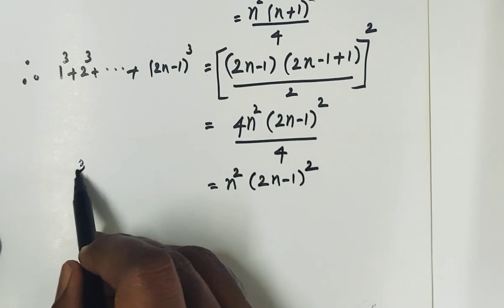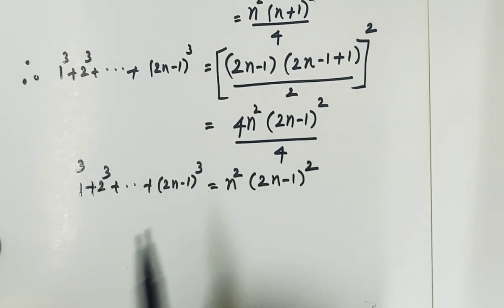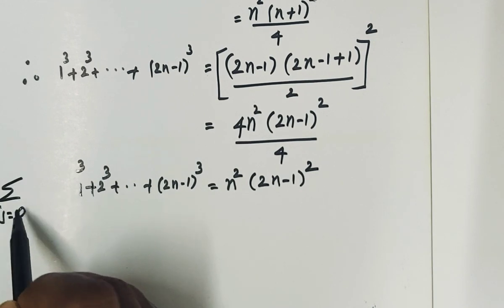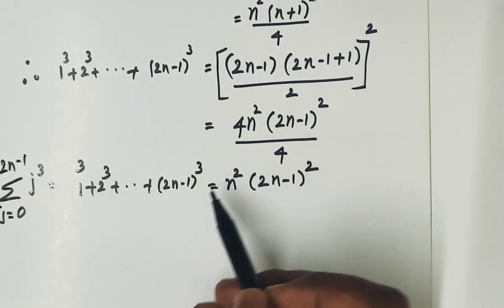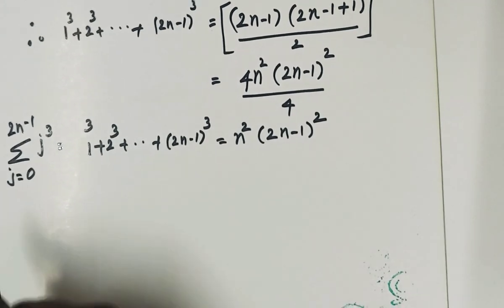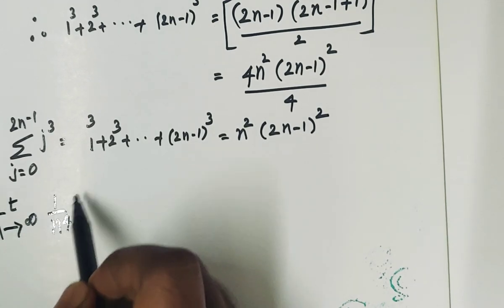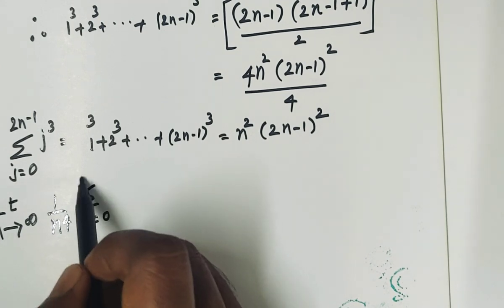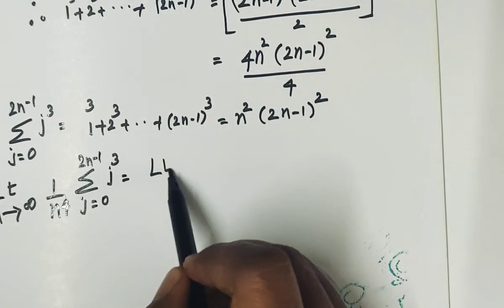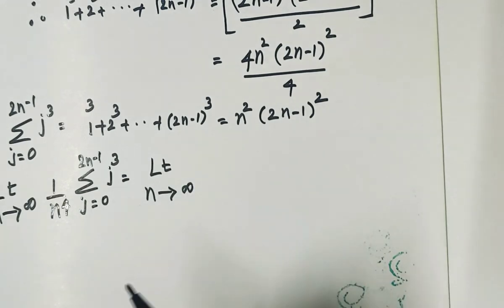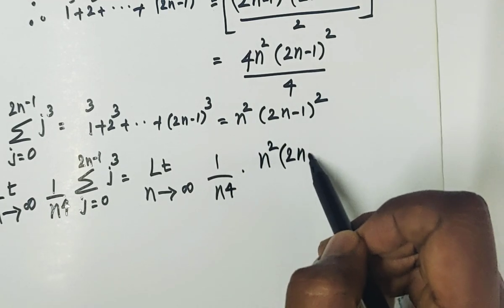So 1 cube + 2 cube + 3 cube + ... + (2n−1) whole cube, which is the summation j from 0 to 2n−1 of j cube, equals n squared (2n−1) squared. Now substituting back into the original question: limit n tends to infinity, 1 by n power 4, into n squared (2n−1) squared.